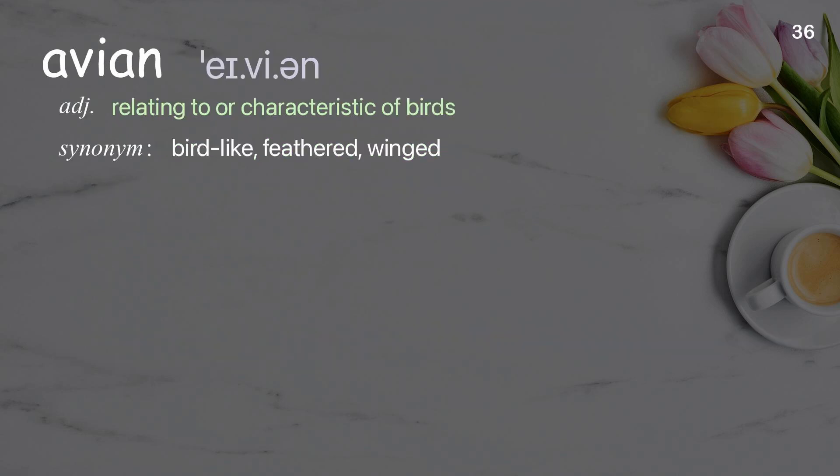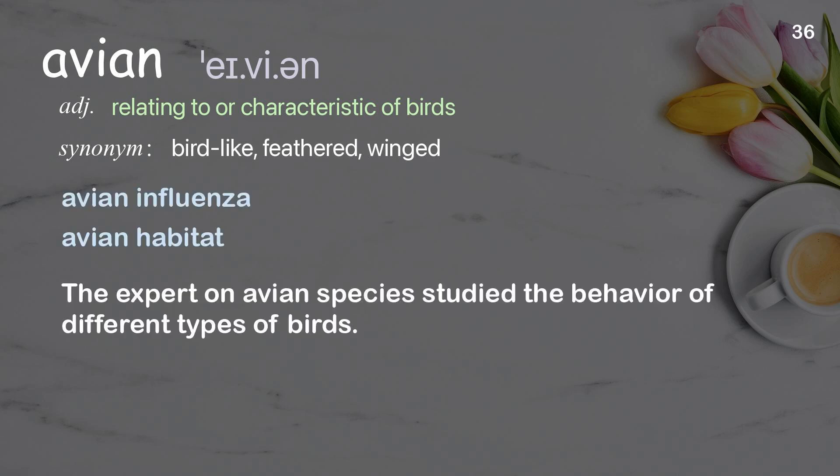Avian: Relating to or characteristic of birds. Examples: Avian influenza. Avian habitat. The expert on avian species studied the behavior of different types of birds.